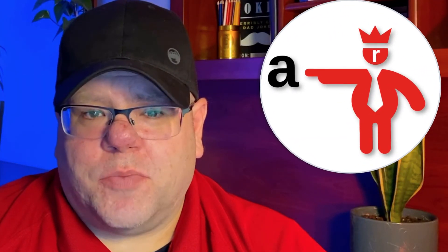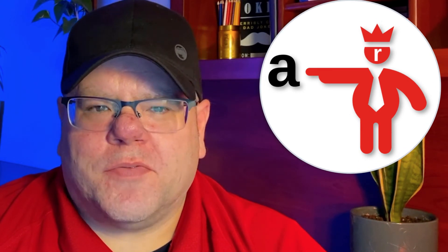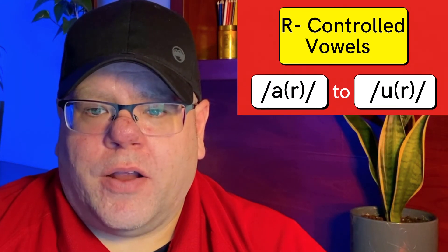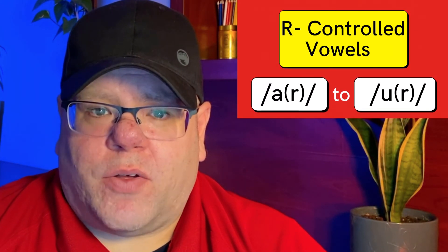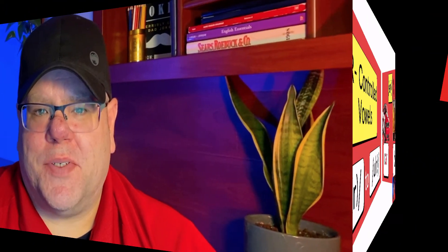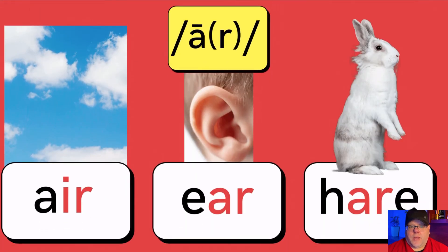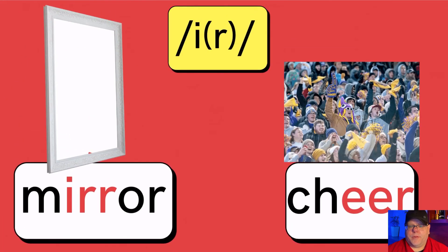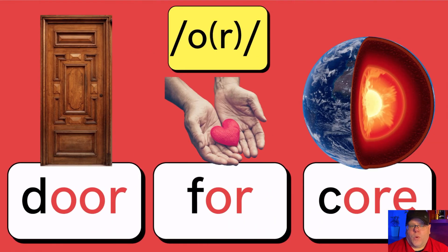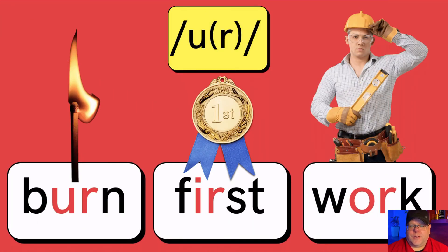The letter R can actually be very bossy to the vowels that come before it — vowel sounds can be influenced by the letter R, and it can change how you pronounce the vowel in front of it. Here are some examples: AR as in car and bar. AIR as in air, ear, or hair. EAR as in mirror or cheer. OR as in door, for, or core. UR as in burn, first, or work.